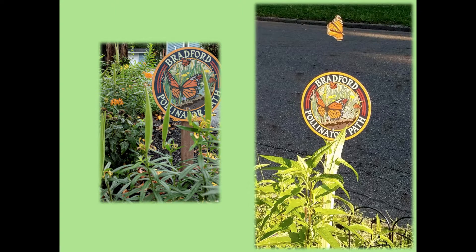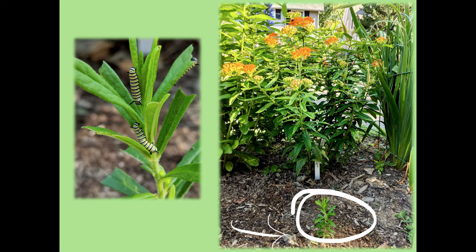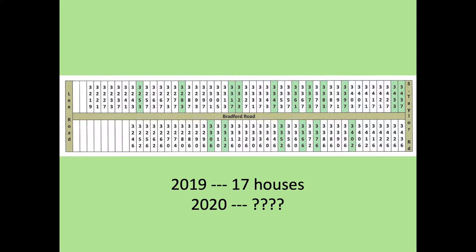We installed attractive signs to signal our intention to create a biological corridor for pollinators. Plant it and they will come! For example, a monarch laid her eggs on Asclepias tuberosa, butterfly milkweed, and there we had three caterpillars right beside the sidewalk. This is the house you saw earlier — what a beautiful garden by the end of the summer. This year we expect everyone to expand their pollinator patch and more neighbors to join in.